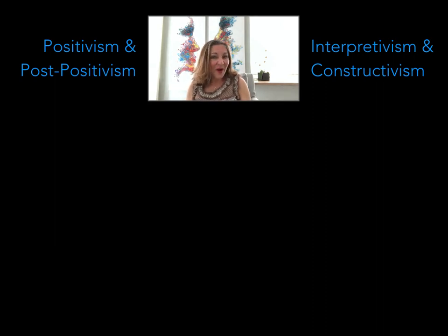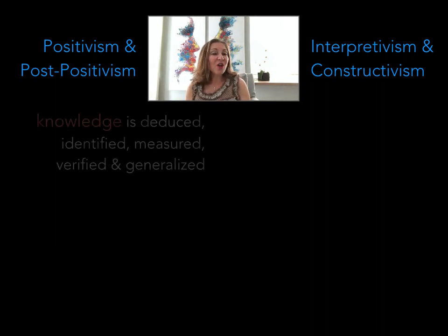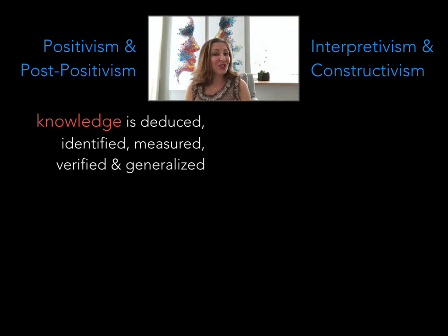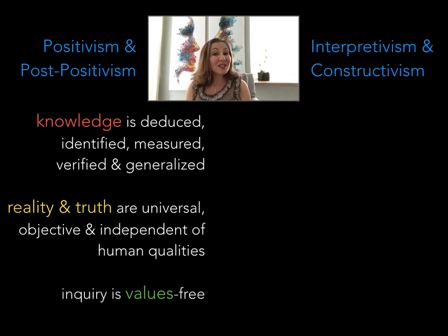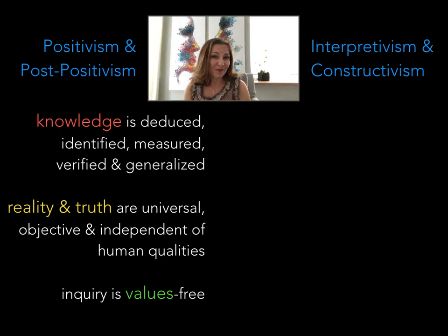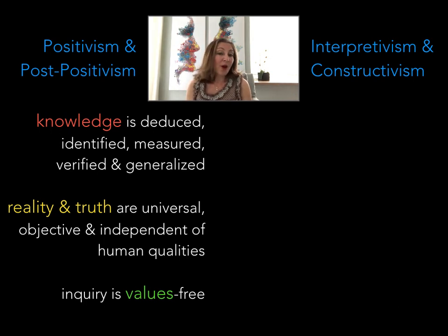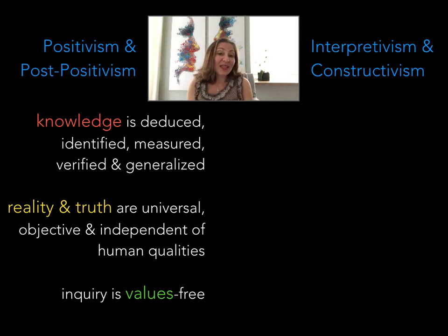Very simply, positivism and post-positivism state that knowledge is deduced, identified, measured, verified, and generalized; that reality and truth are universal, objective, and independent of human qualities; and that it is possible to separate oneself from the inquiry process so that the inquiry is free of any values and biases that the researcher might hold. Post-positivists are a little less extreme — they acknowledge that some things cannot be known fully or for certain, that observation is fallible and can be affected by the researcher, and that theory is revisable.